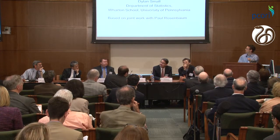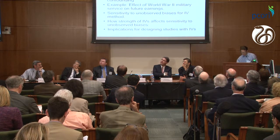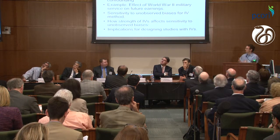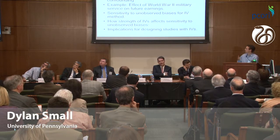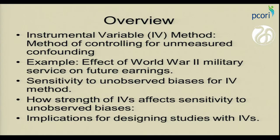Thanks Michael. I'm going to talk about the instrumental variable method — one method of controlling for unmeasured confounding. I'll give an example and then focus on how the strength of instruments affects how sensitive the instrumental variable method is to biases.